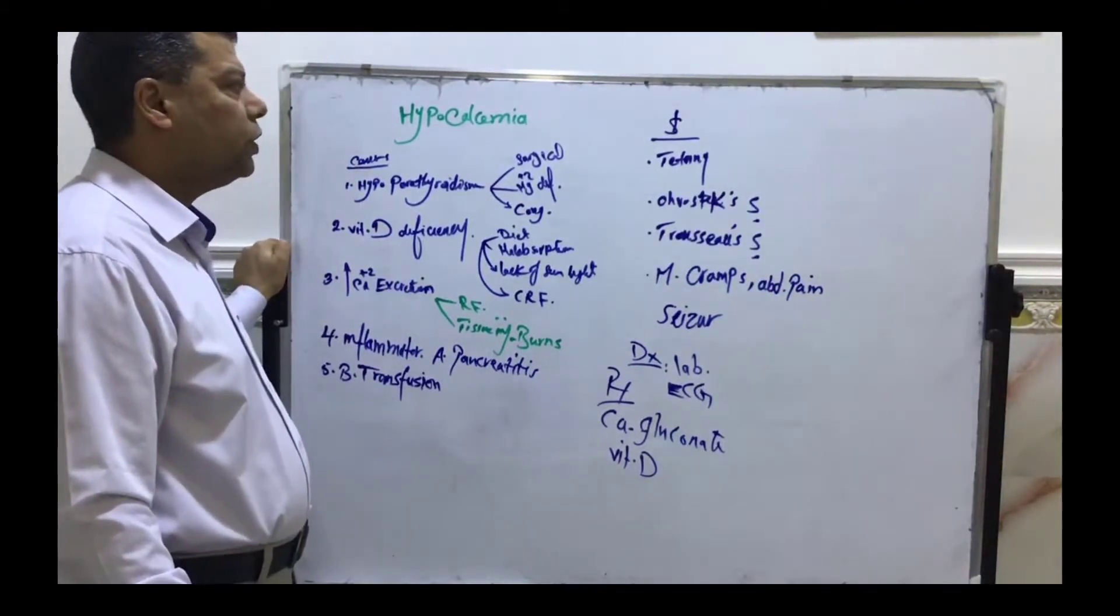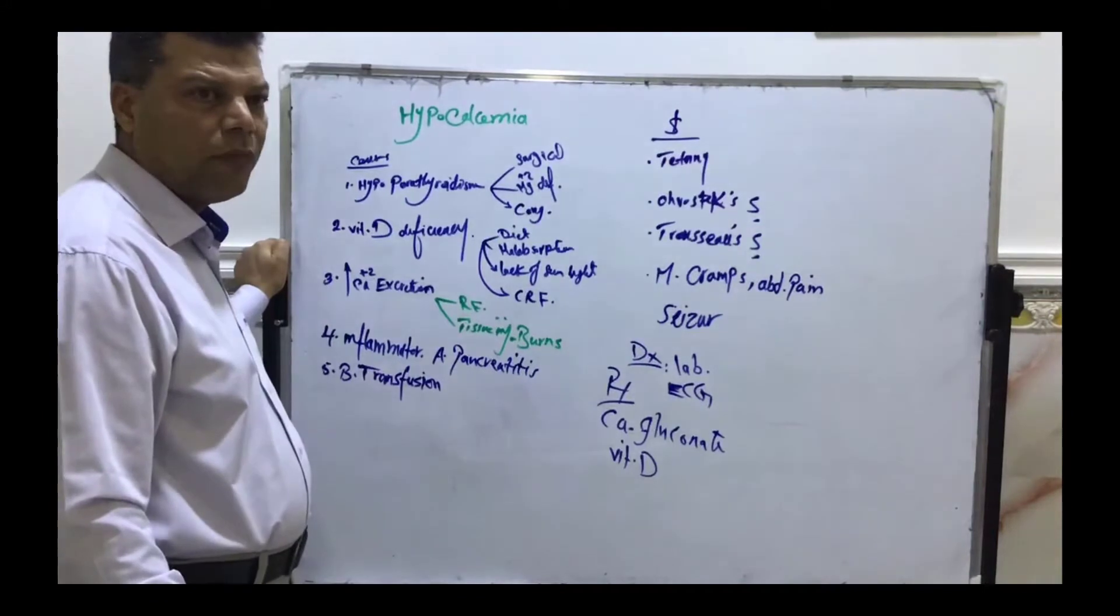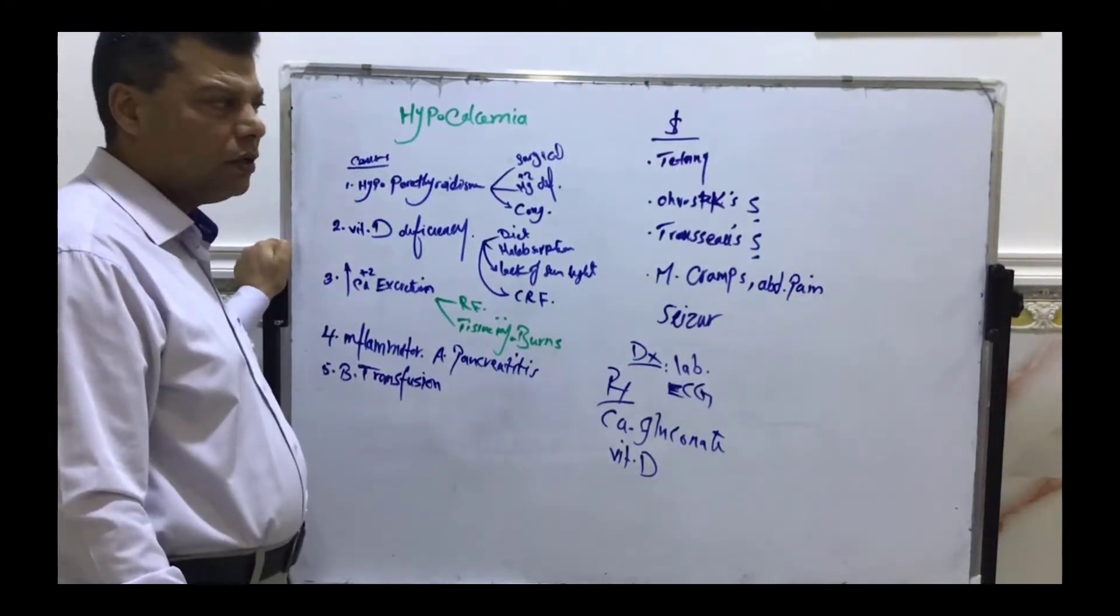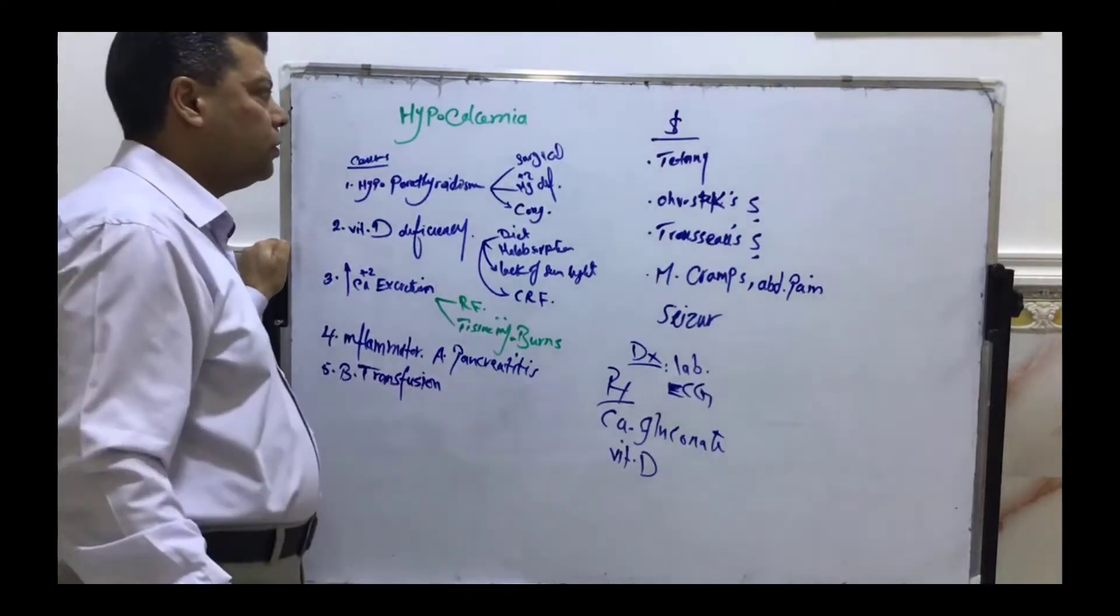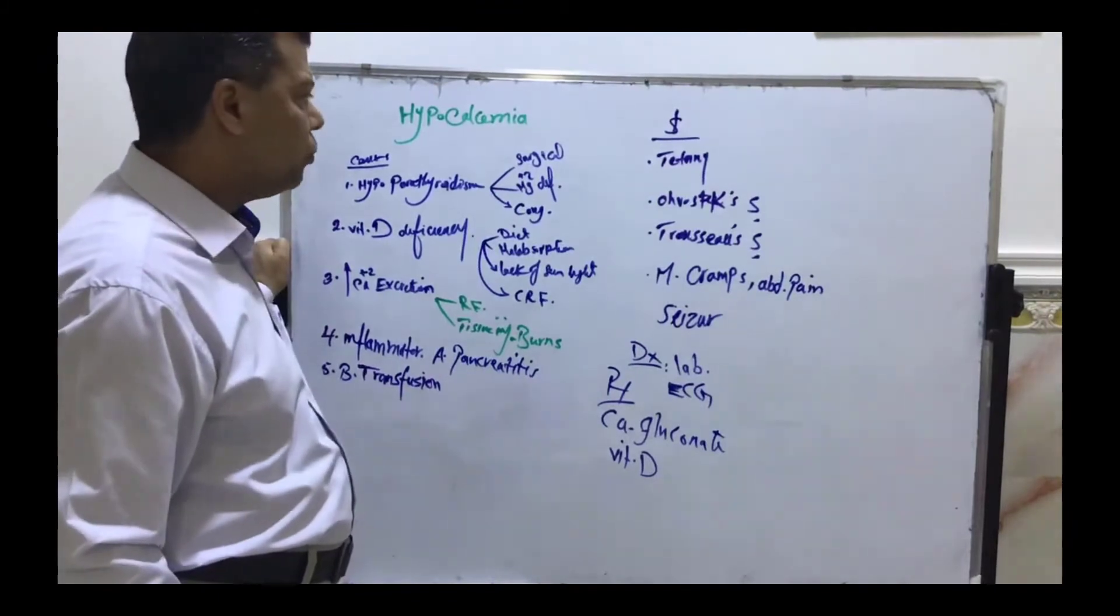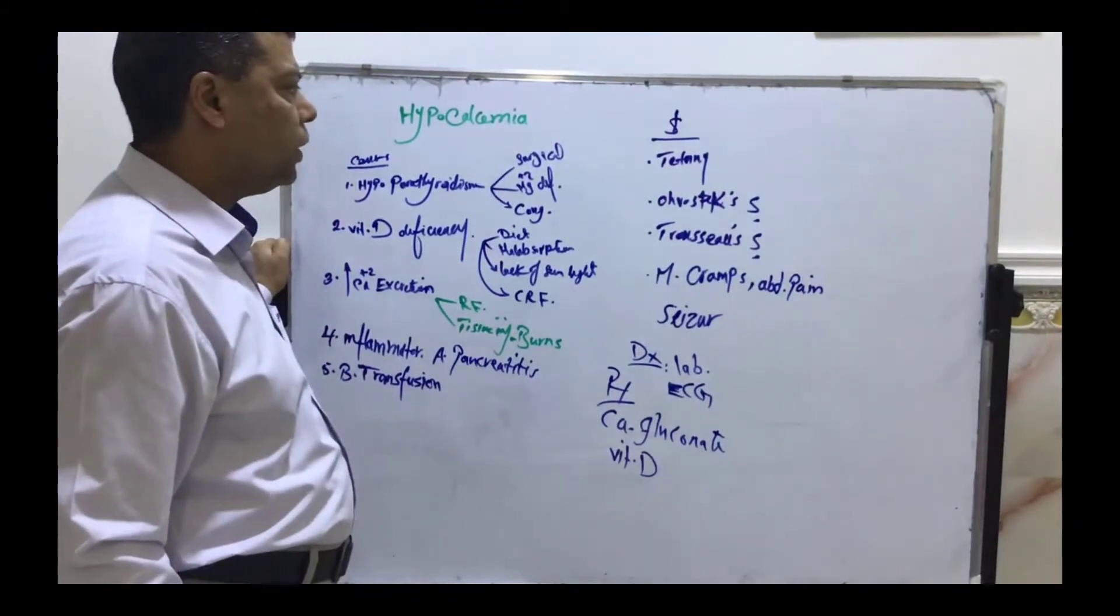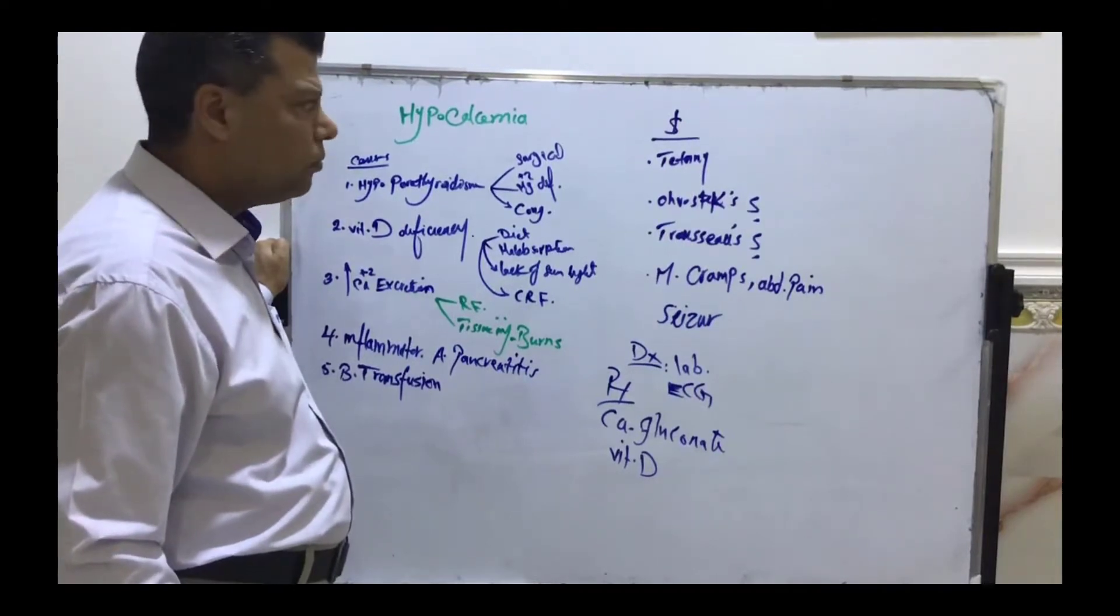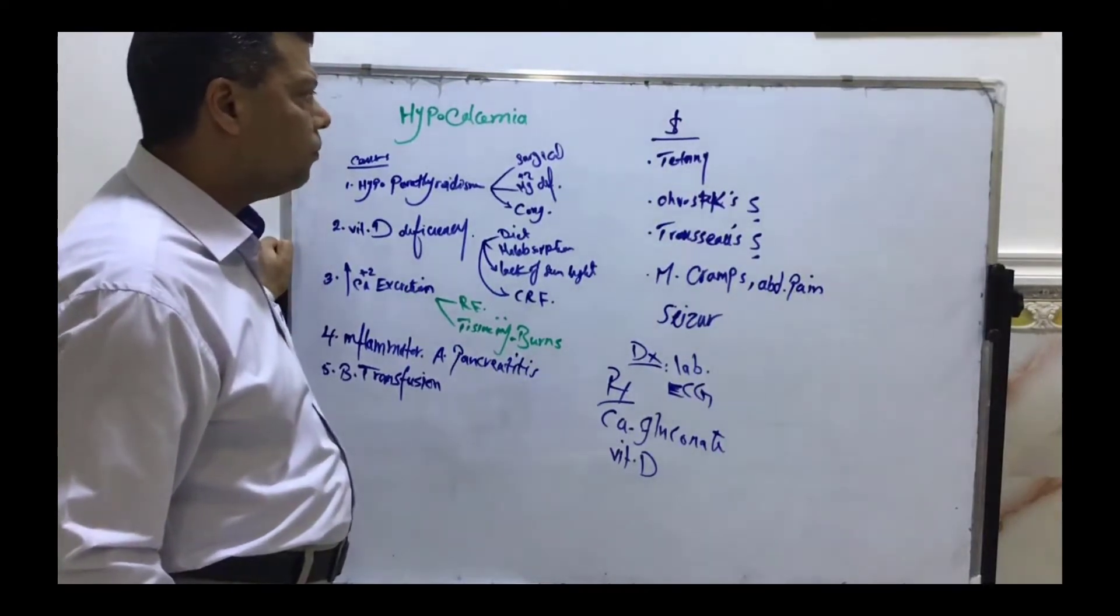Second is deficiency of magnesium ion, which is an important component for biosynthesis of parathyroid hormone. The third is congenital malablation of the parathyroid gland.